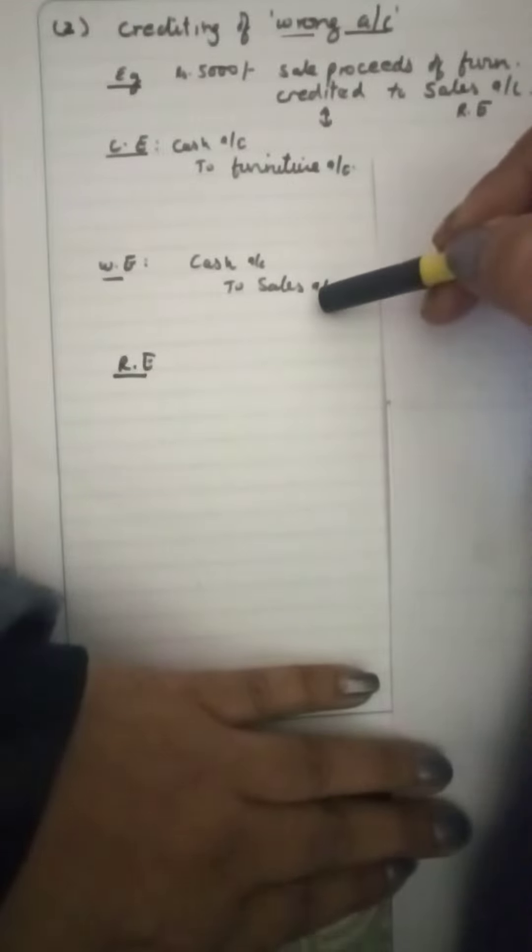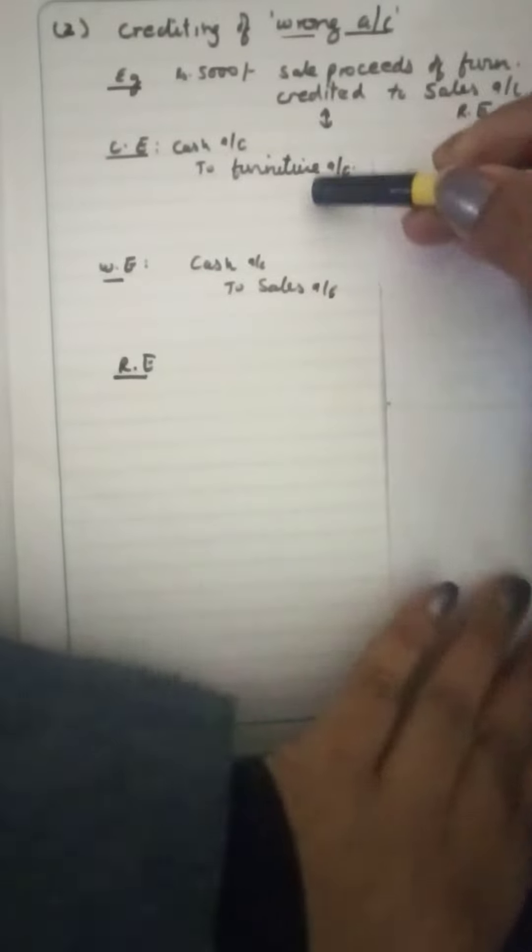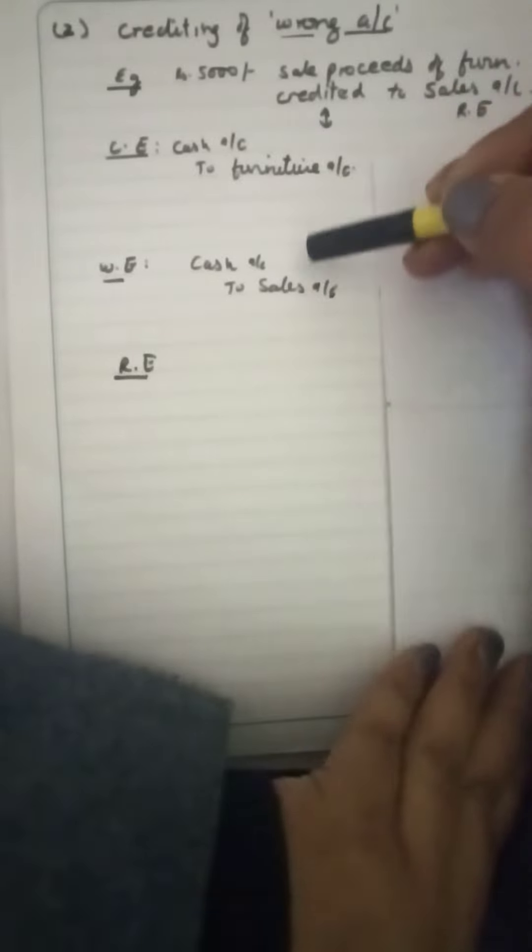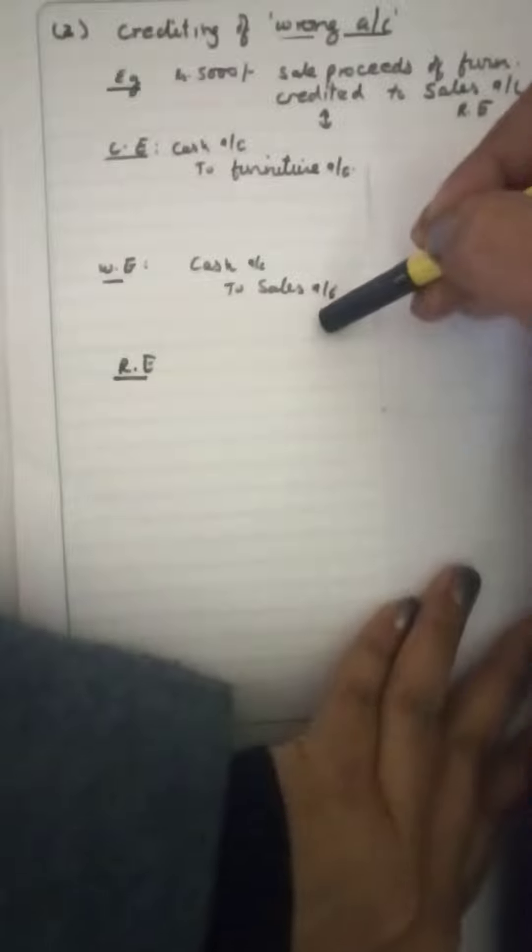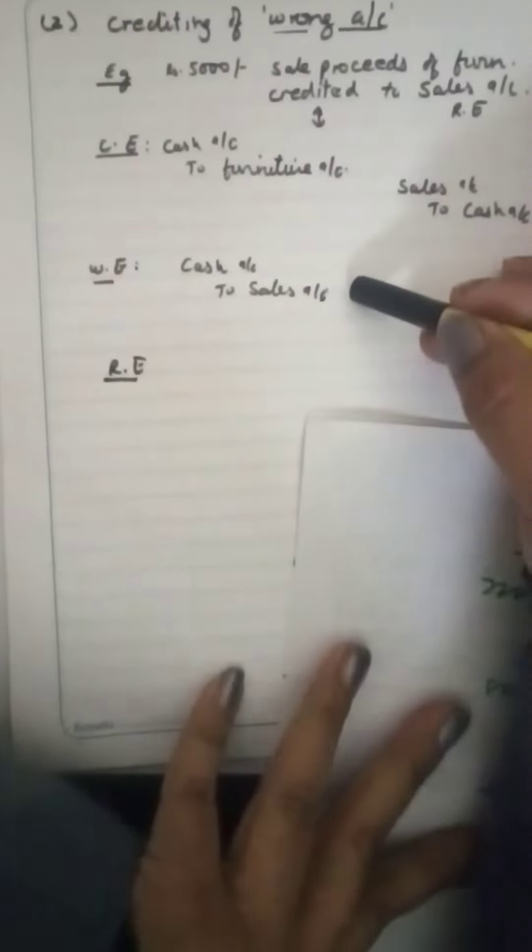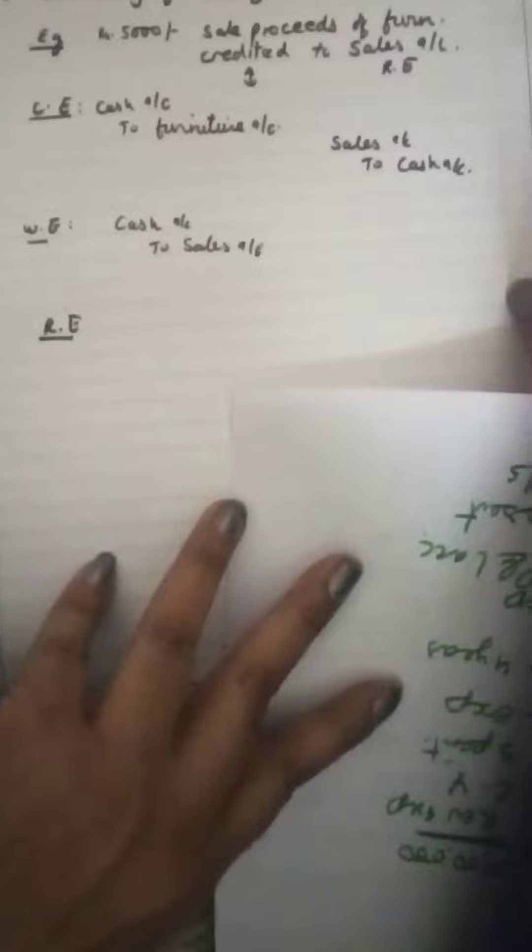So the procedure that we are following: we will repass the correct entry, we will pass the wrong entry, we will reverse the wrong entry. The cash to sales here will be reversed as sales to cash.